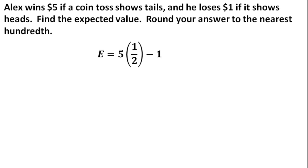If he was going to lose three dollars, he would subtract three. So minus one times the probability that this is going to occur. He's going to lose a dollar if it shows heads. So we've got to figure out the probability of showing heads. Again, that's going to be one-half.